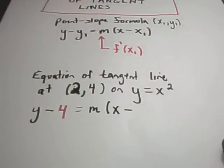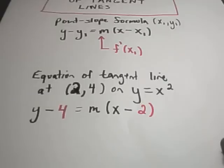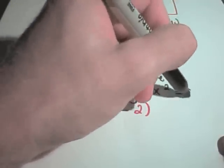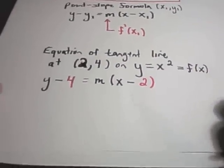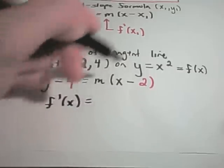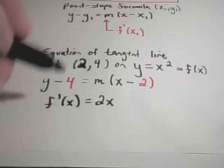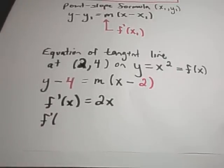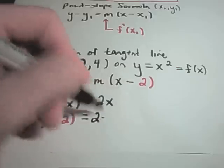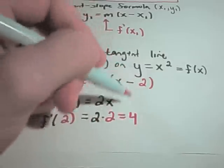The x-coordinate we're working at is 2. To figure out the slope of the tangent line, I can write my function as f(x). Taking the derivative, f prime of x — the derivative of x squared — is going to be 2x. So the derivative evaluated at the x-coordinate of 2 is simply 2 times 2, giving a slope of 4.